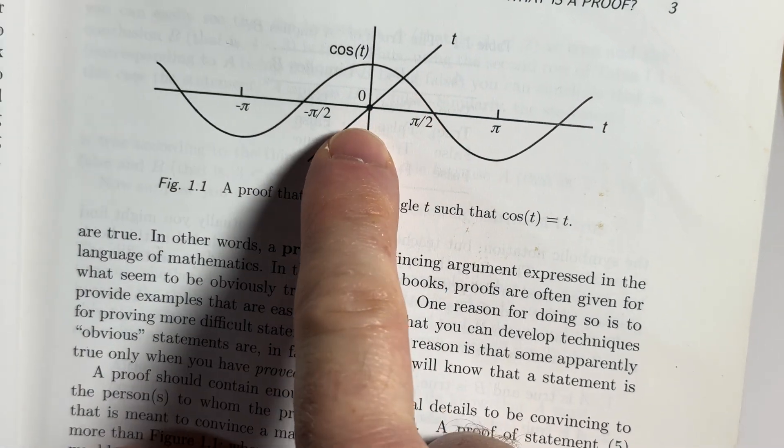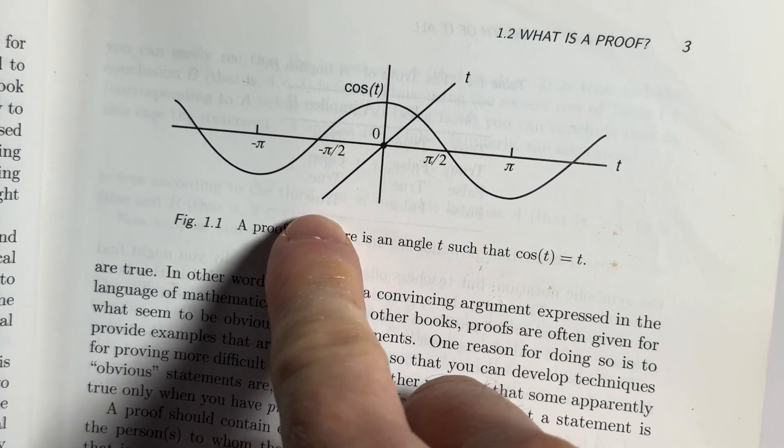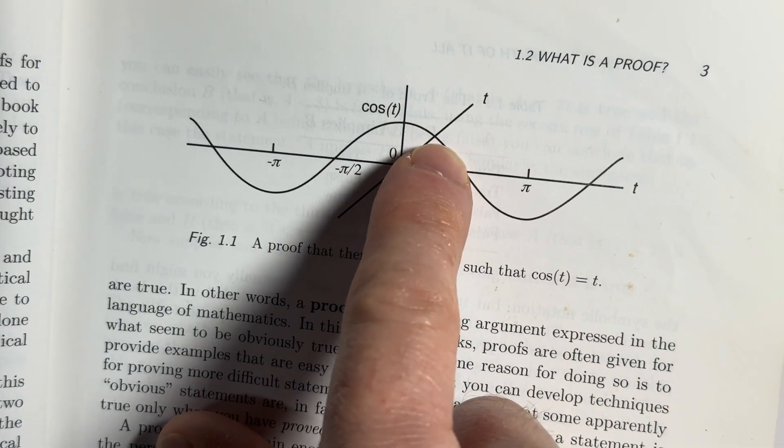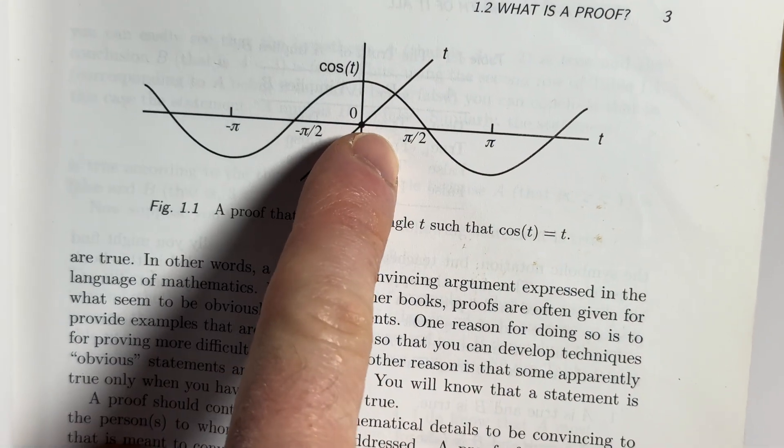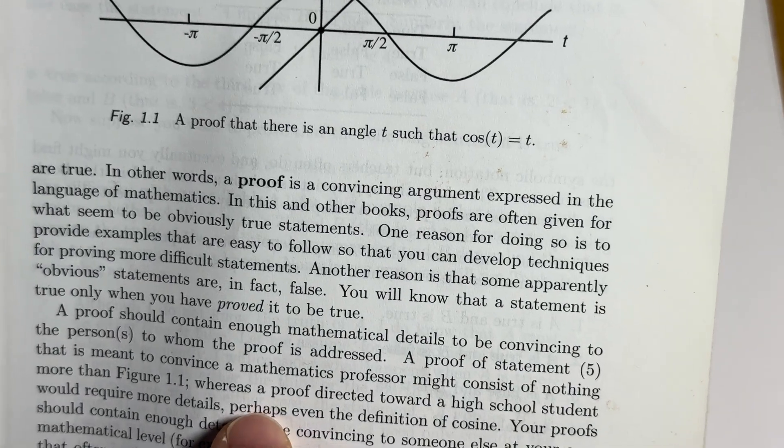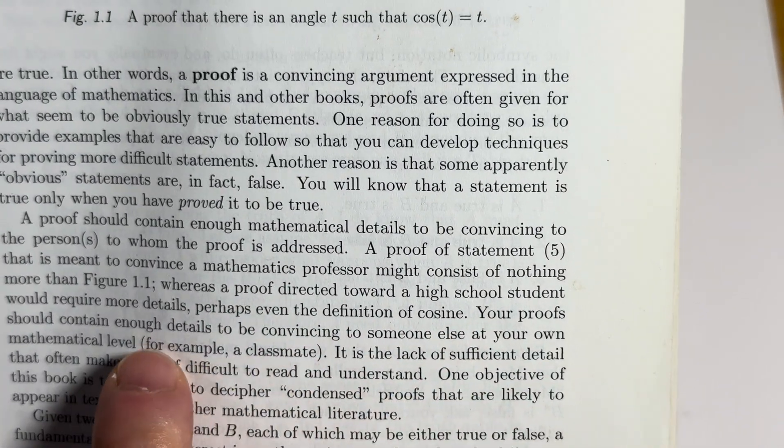So here, you can see cosine t is equal to t, right? Because you can just basically draw the graph of cosine, you can draw the graph of y equals t, and you can see they intersect. So there is a value of t, such that cosine of t is equal to t. So pretty clear.